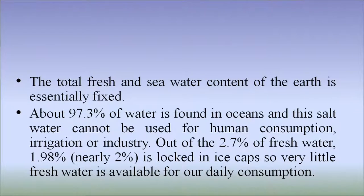Also, there are numerous interstate and international conflicts for water going on all over the world because it is becoming a scarce resource. Total fresh water and sea water of the earth is essentially fixed. About 97.3 percent of water is found in oceans and this salt water cannot be used for human consumption, irrigation or industries. Out of the 2.7 percent of fresh water, 1.98 percent — that is nearly 2 percent — is locked in ice caps.